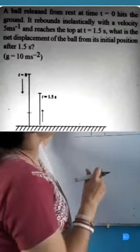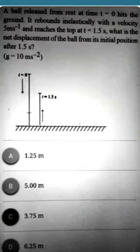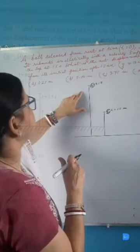A ball released from rest at time t = 0 hits the ground. It rebounds inelastically with a velocity of 5 meter per second and reaches the top at 1.5 seconds. What is the net displacement of the ball from the initial position?